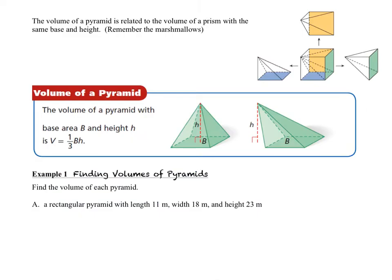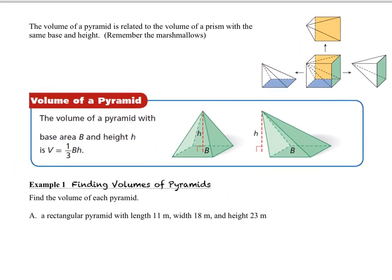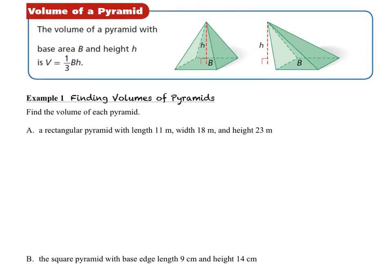The volume of a pyramid is related to the volume of a prism with the same base and height. We started out with a cube, which is a square prism, and we basically pulled it apart along those dotted lines, creating three square-based pyramids of equal volume. So the volume of a pyramid is one-third times the area of the base times the height. That's easy because for a prism and a cylinder we use V equals uppercase B times H — now we just multiply that by one-third for the pyramid.